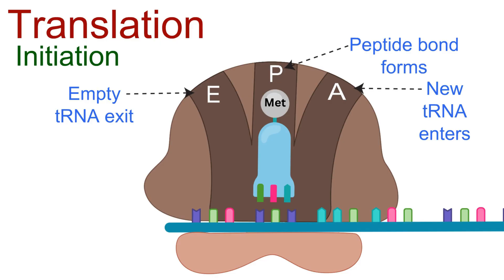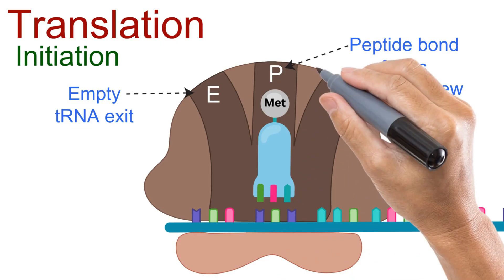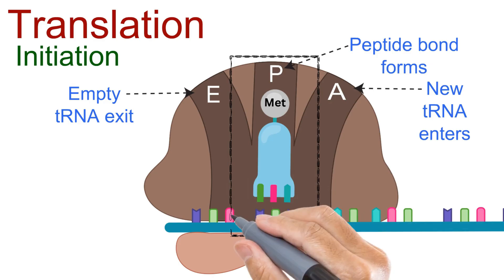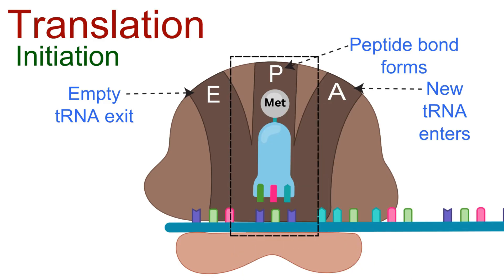With the ribosome fully assembled and the first amino acid in place at the P site, the protein building machinery is ready to move on to the next stage, elongation, where the chain starts growing one amino acid at a time.